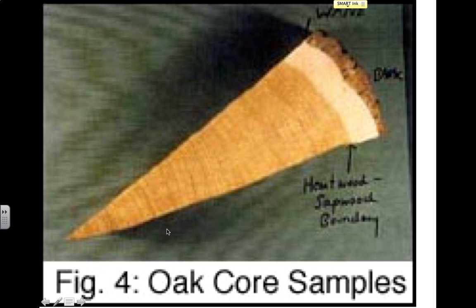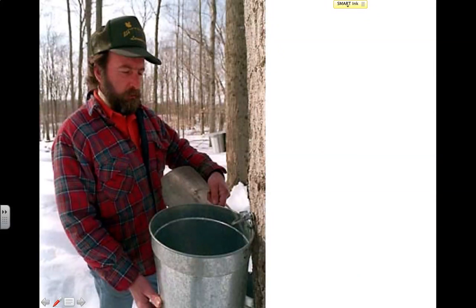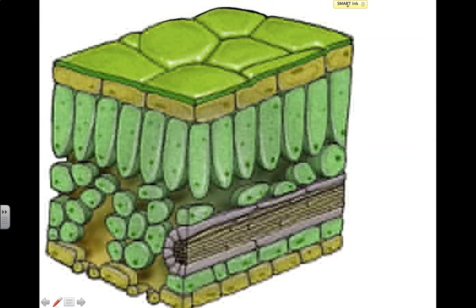Some of the older wood is going to be really towards the interior, and the wood that is actually being used — the xylem transporting things — is going to be more towards the outside, which is called the sap wood. If you hammer into that, that's where the sap and such are flowing, and then you have the phloem towards the outside. This is actually somebody getting maple sap from a maple tree to make maple syrup. We'll talk about leaves another time.